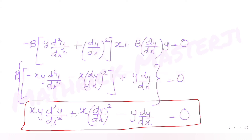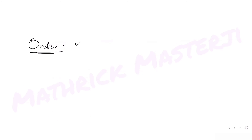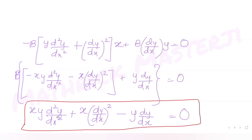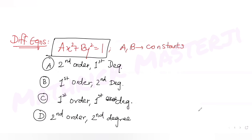Now we determine the order and degree of this differential equation. The order is the highest derivative present, which is d²y/dx², so the order is 2. The degree is the power of the highest derivative; since d²y/dx² appears to the power 1, the degree is 1. So order is 2 and degree is 1, which matches option A — second order and first degree.